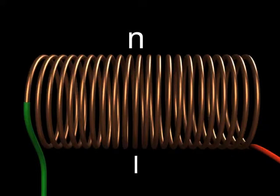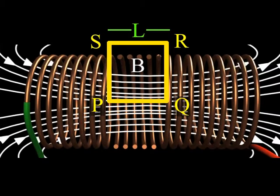Imagine a rectangular Amperian loop PQRS near the middle of the solenoid where PQ is equal to l.